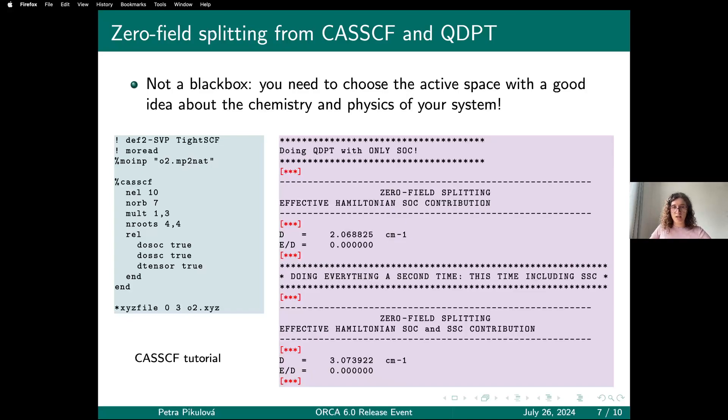In case of zero-field splitting, not only states with the same spin multiplicity as your ground state—these triplets I'm asking for—can contribute, but also states that have total electron spin one less or one more can contribute by coupling with the ground state. That's why I'm also asking for singlets. Actually, the main contribution comes from an excited singlet state. In the REL block, I'm saying I want spin-orbit and spin-spin coupling and the zero-field splitting tensor.